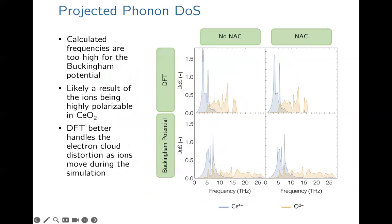To get a better idea of which atoms are moving at different frequencies, we've also plotted the phonon projected density of states for both DFT and the empirical potential. The projected density of states shows which atoms are mostly responsible for the different observed modes. As you might expect, the higher frequency modes are due to the movement of oxygen, while at low frequencies everything is moving. This is plotted in mass-weighted units, and it contains similar information to what we saw in the dispersion — we know that oxygen is doing most of the movement at high frequencies.